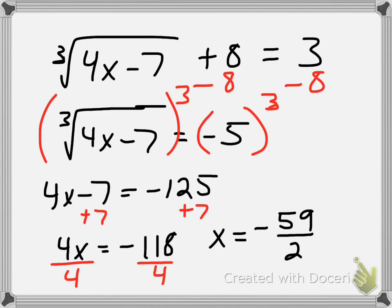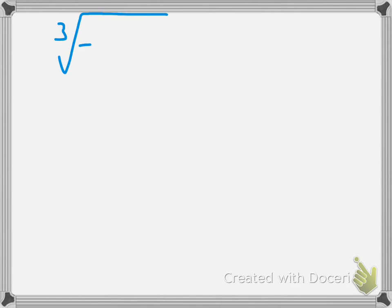And I will say the cube root of negative 59 halves times 4 plus 7 plus 8 equals 3. Make sure I have that right. Minus 7. Make sure.